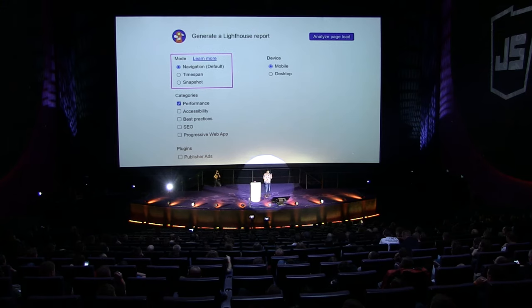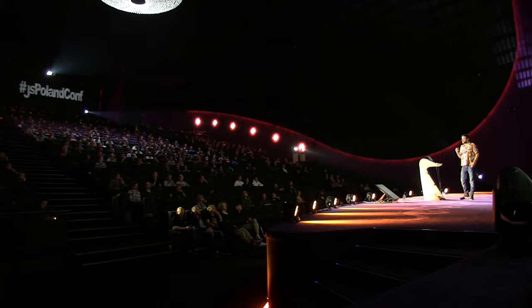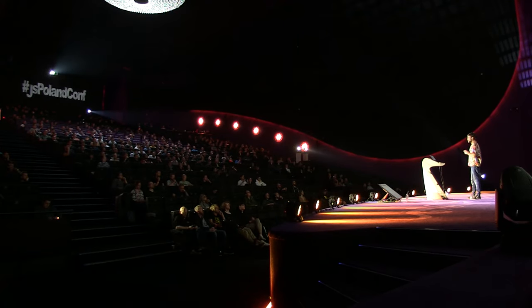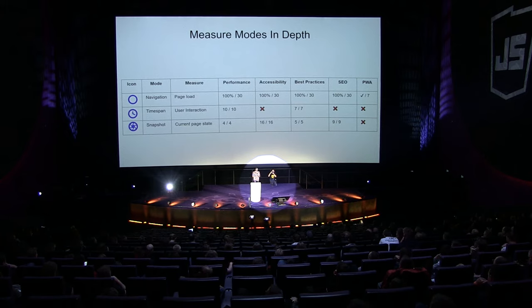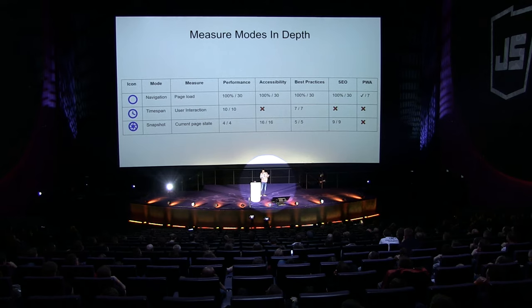Those three measurement modes will help us to measure runtime performance and make evaluations of our page at certain times. Navigation is a fully-fledged Lighthouse report — everything in the normal old report is also here. Time span is a reduced set of tests; there is no accessibility, SEO, or Progressive Web App audit, but we have some performance tests and some best practice tests.